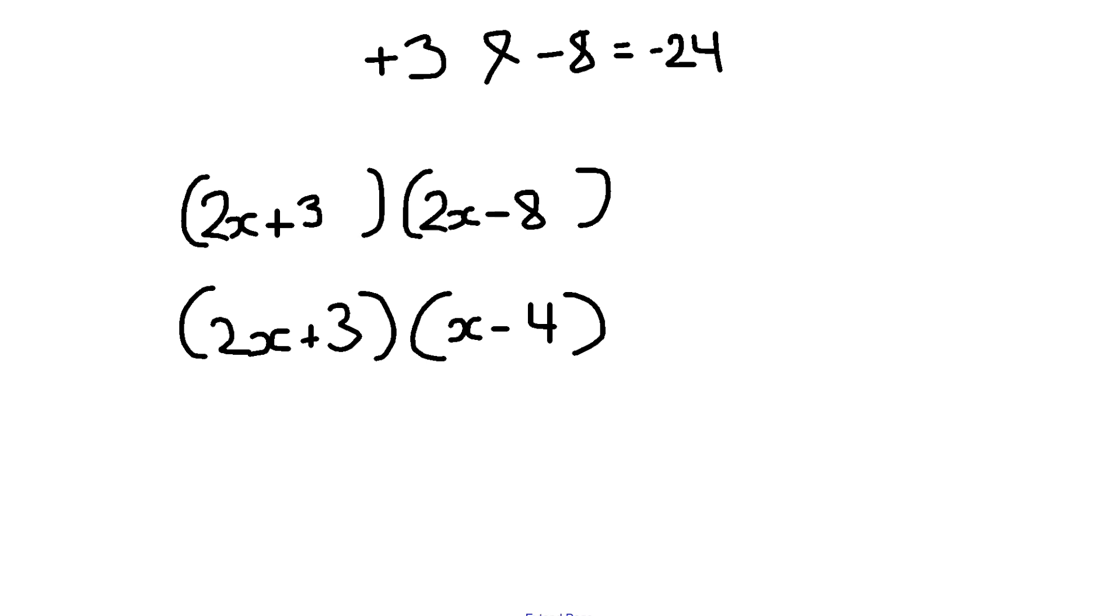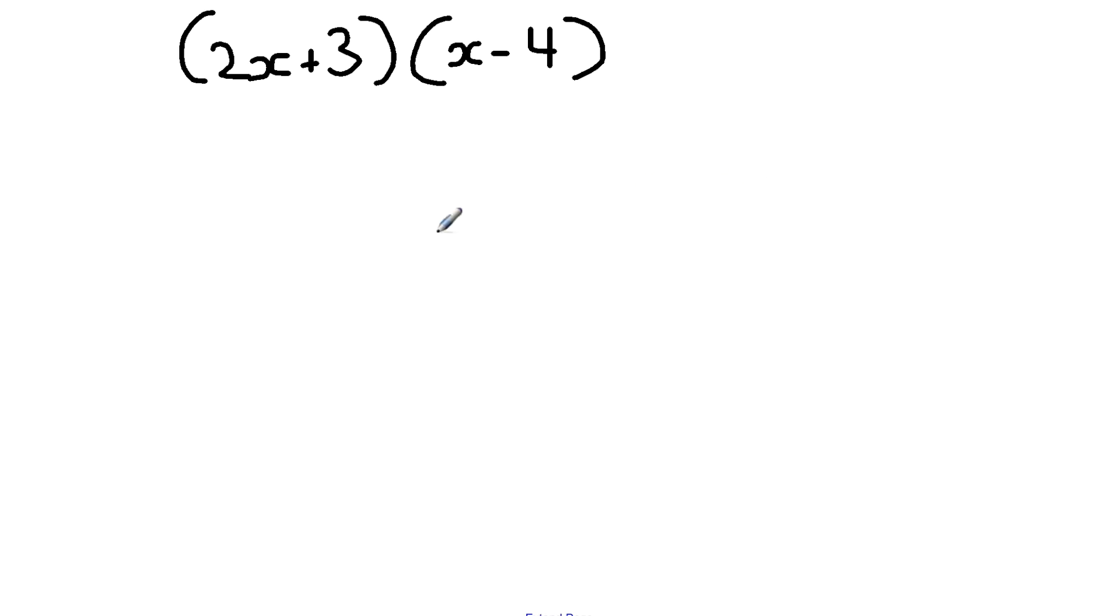Now we have factorized the numerator and the denominator. I'm going to put them together. So we should have open bracket x plus 4 close bracket x minus 4 close bracket, over open bracket 2x plus 3 close bracket, open bracket x minus 4 close bracket.